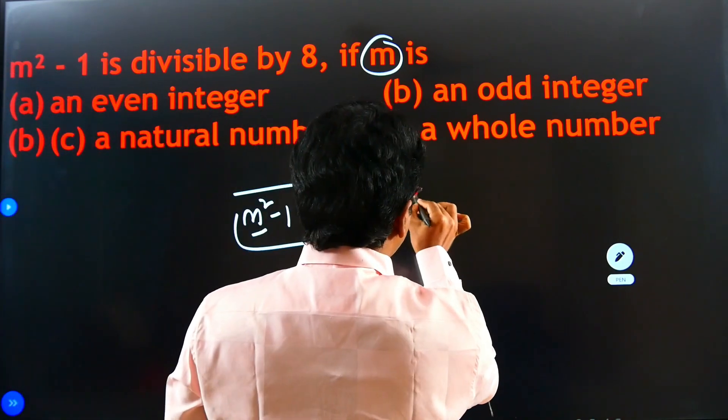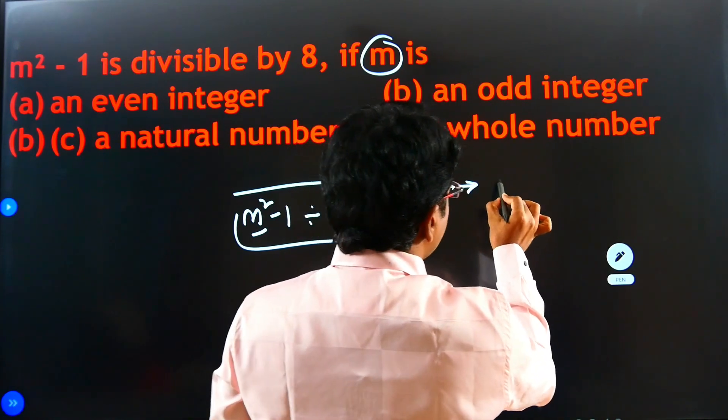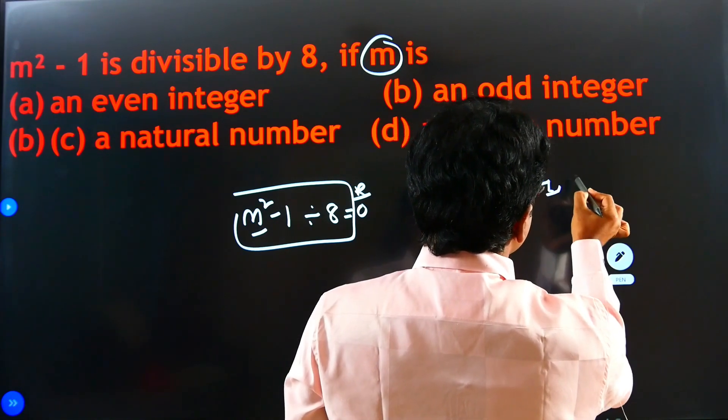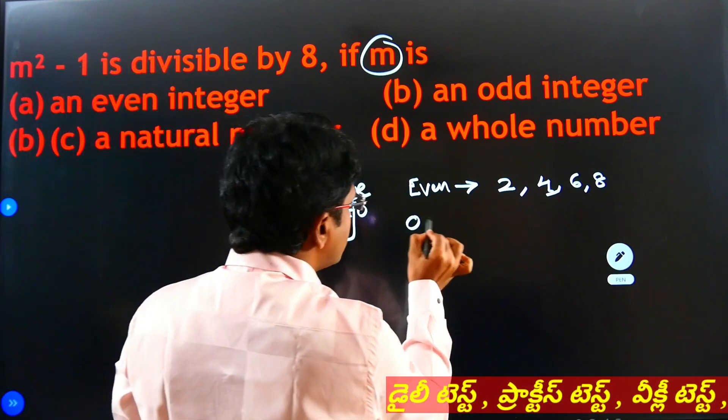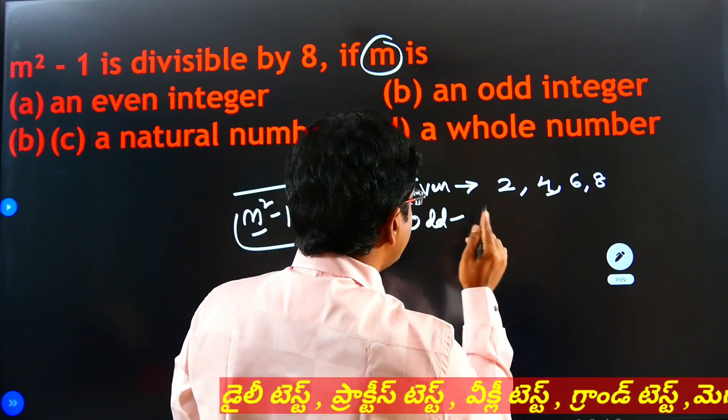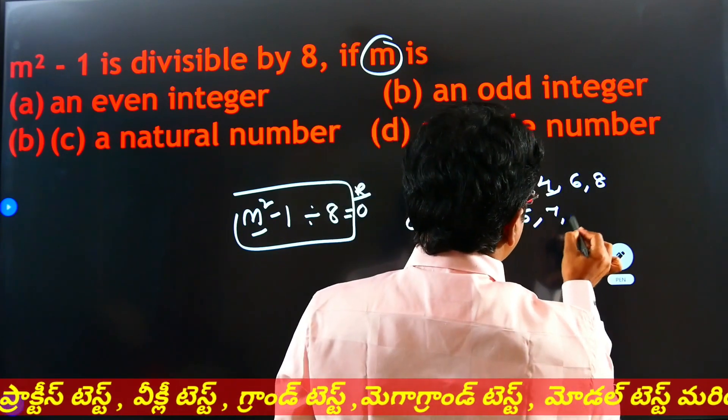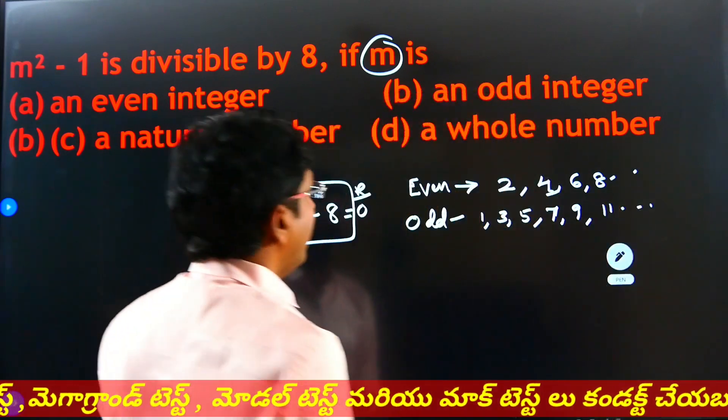Maybe M is an even number? First of all, even numbers are 0, 2, 4, 6, 8, like this. Even numbers. Odd numbers are 1, 3, 5, 7, 9, 11, and both numbers.